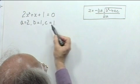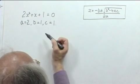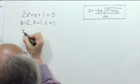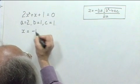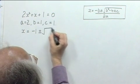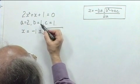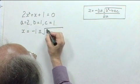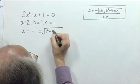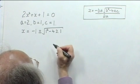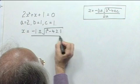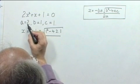And we substitute these values into the formula. So we'll get x equals minus b, which is minus 1, plus or minus the square root of b squared, which is 1 squared, minus 4 times a, which was 2, and c, which was 1. All divided by 2a, which is 2 2s of 4.